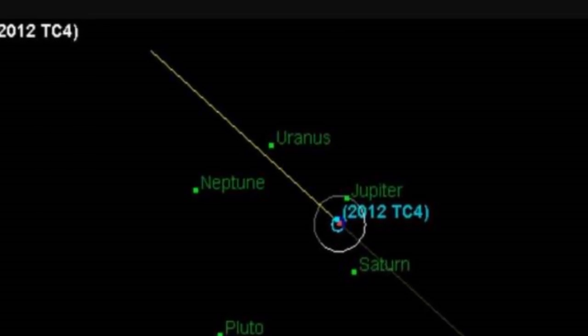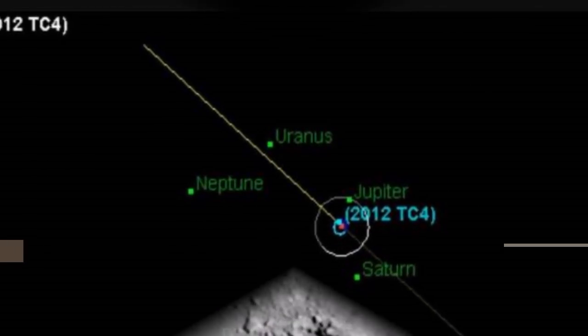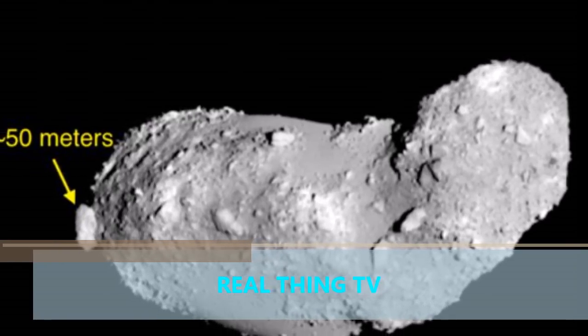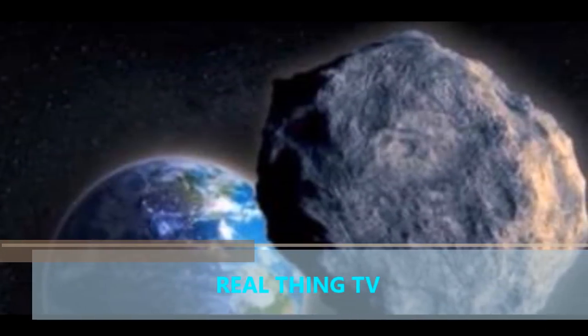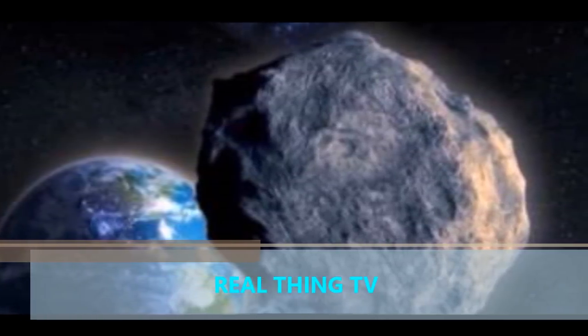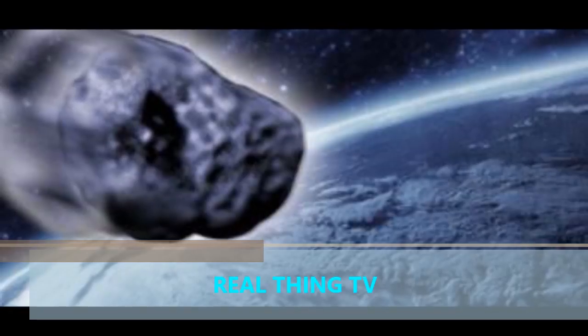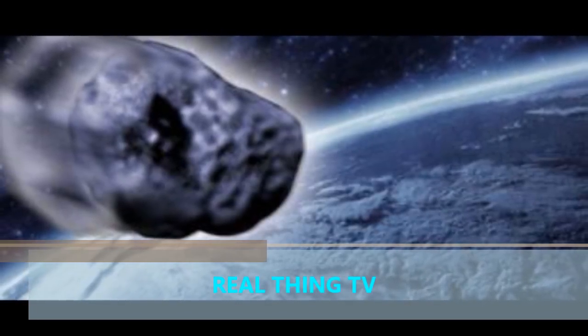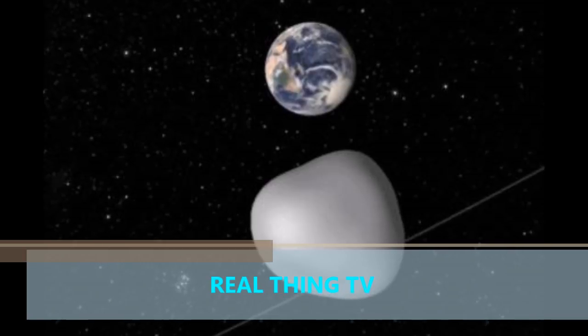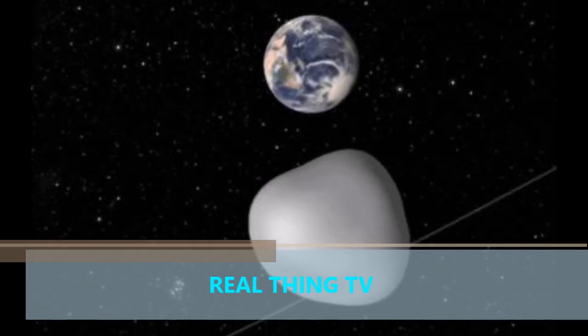NASA is convinced it will not impact, but say it will skim Earth at a distance of about 27,300 miles. At one stage it was feared it could come as close as just over 4,000 miles. Asteroid 2012 TC4 is estimated to be between 10 and 30 meters and will pass by Earth on October 12.